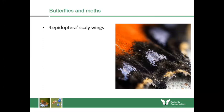Butterflies and moths belong to a group called Lepidoptera, which means scaly wings. In the photograph you can see all the little scales on this butterfly's wing which make up the patterns. Sometimes if you see them in your home you might see all that dust coming off them — that's actually the scales coming off the wings.